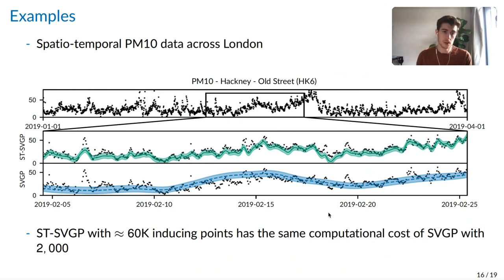So with our model, the ST-SVGP, we run with around 60,000 inducing points, and as shown in green, this is able to capture most of the structure in the data. However, the SVGP is only able to use 2,000 inducing points for the same wall clock time as our model. This is many fewer inducing points, and as shown in blue, results in a very unsatisfactory fit that just smooths over the structure of the data.